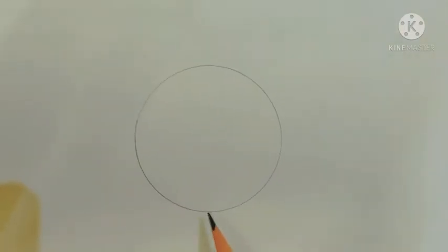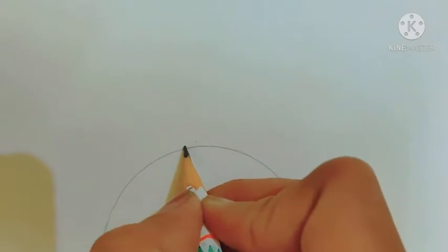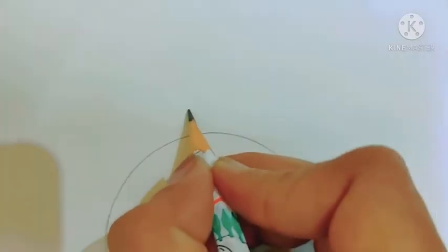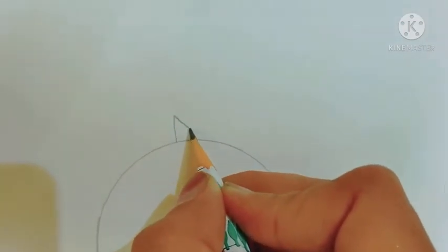Now we will make a small standing line at the top of this circle like this. Now one slanting line like this.